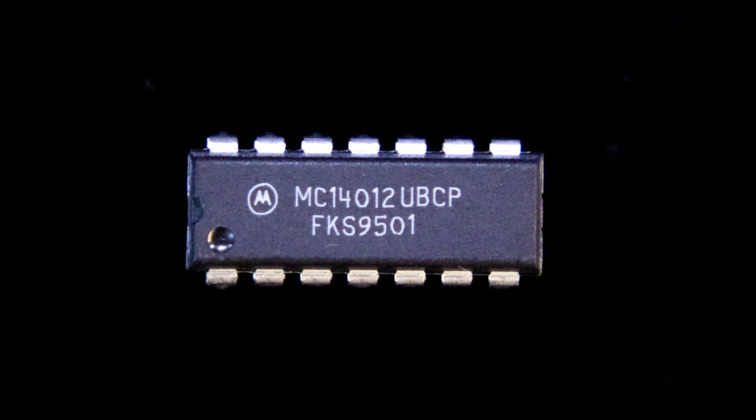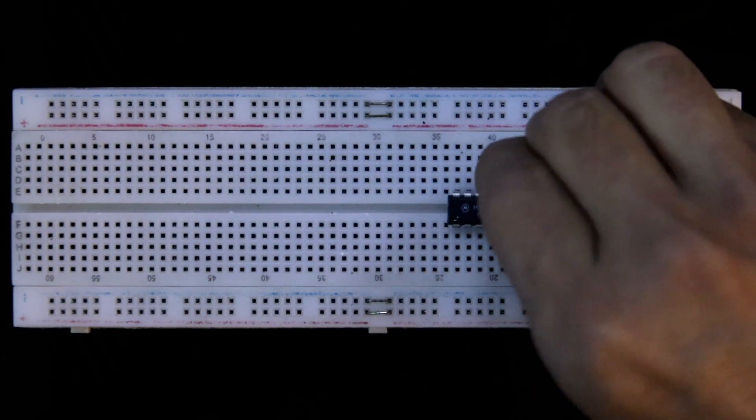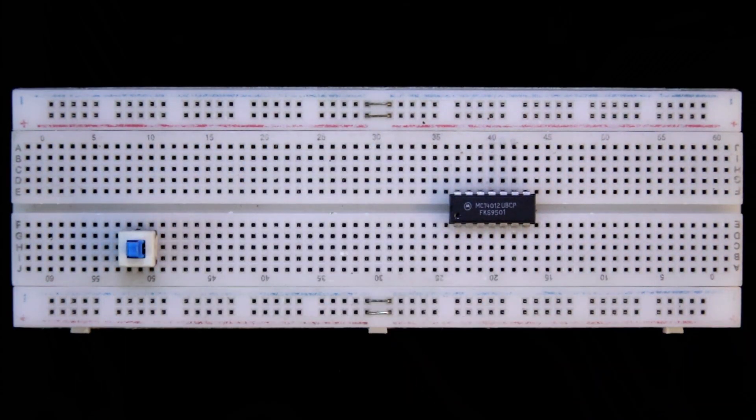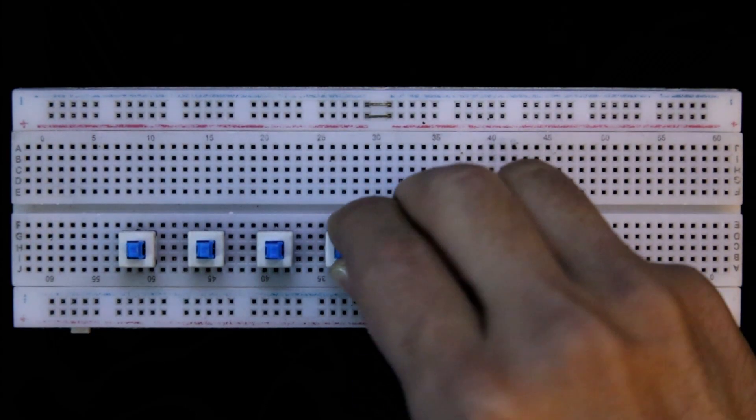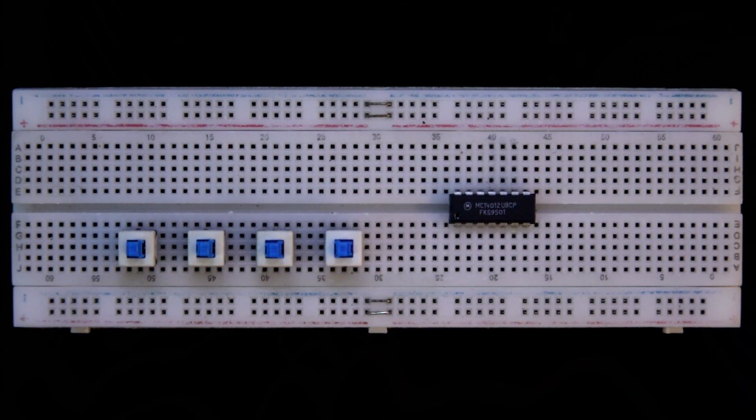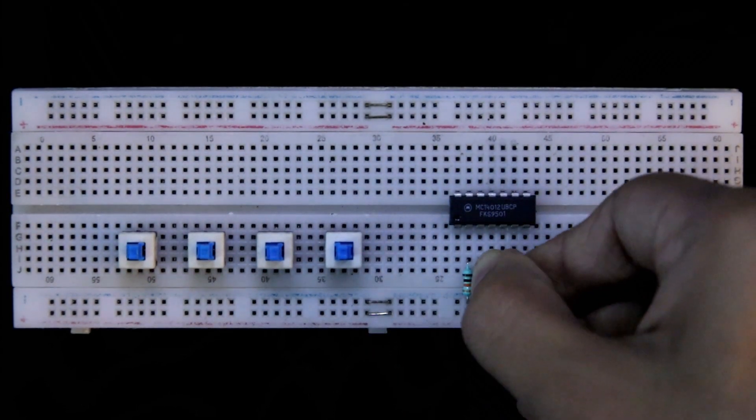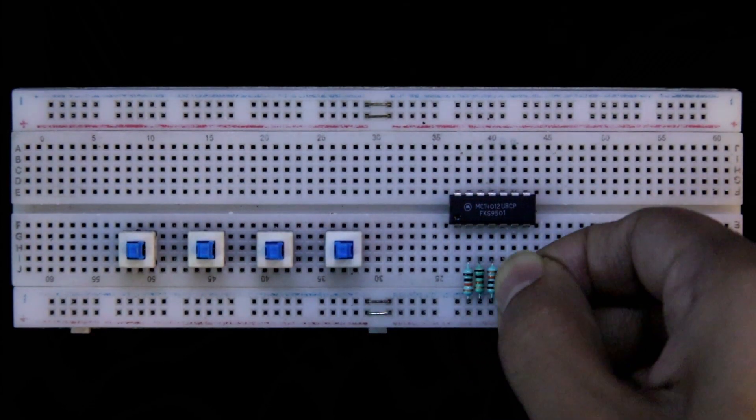Here is our IC CD4012. Switch A, switch B, switch C, switch D. With the input pins, connecting the pull-down resistor. Pin 2, 3, 4 and 5.